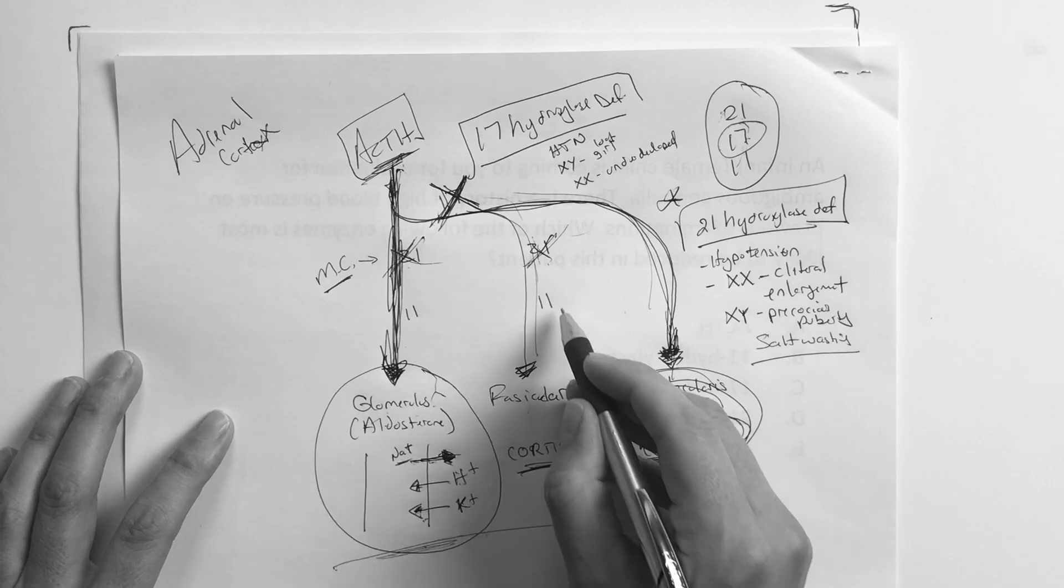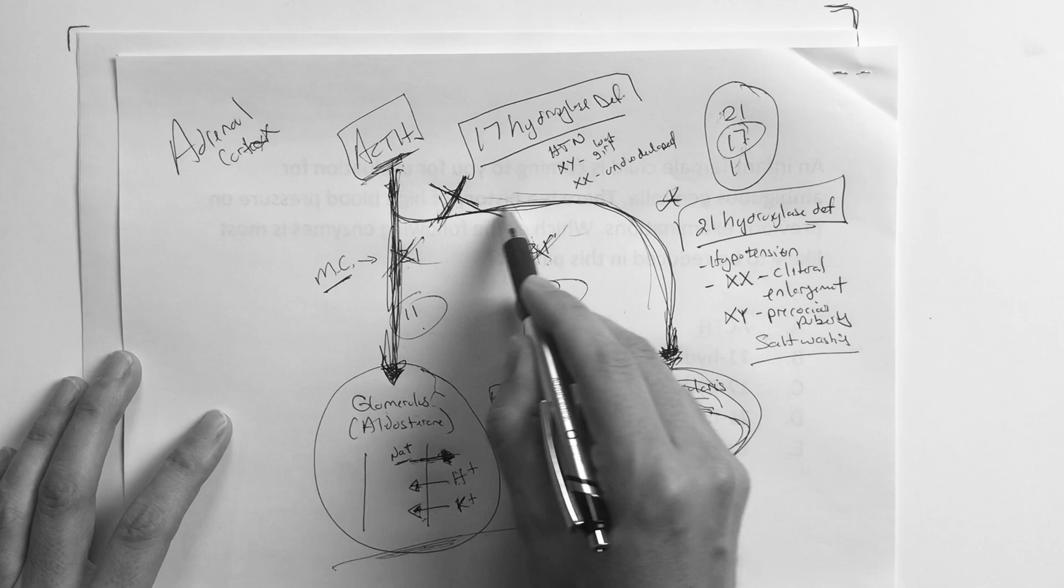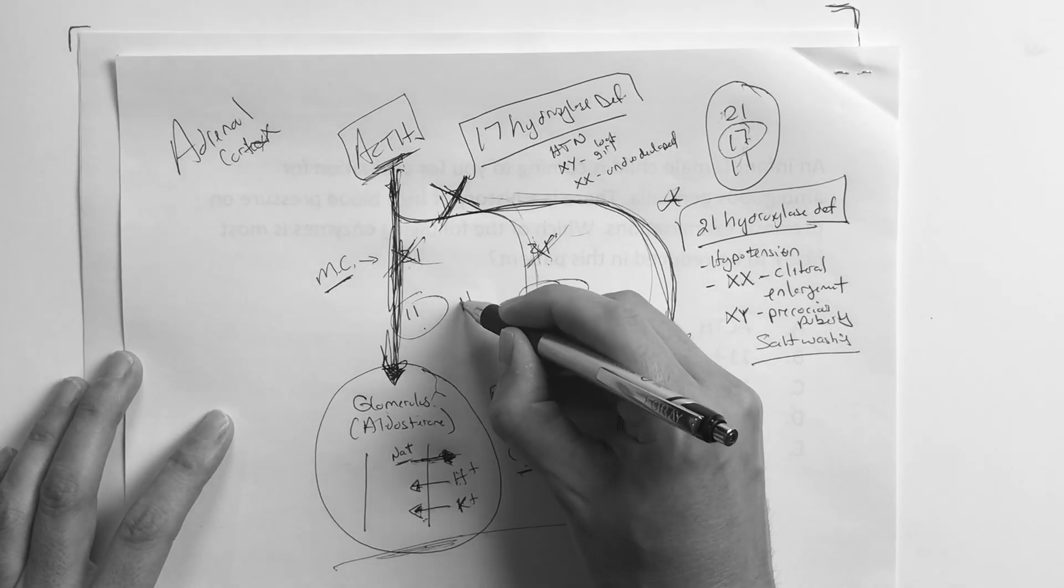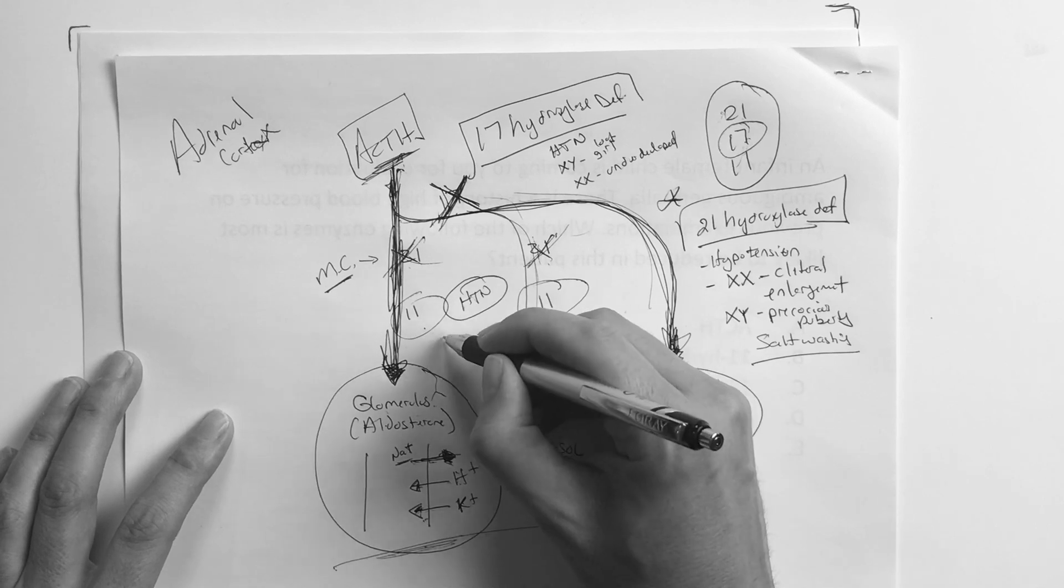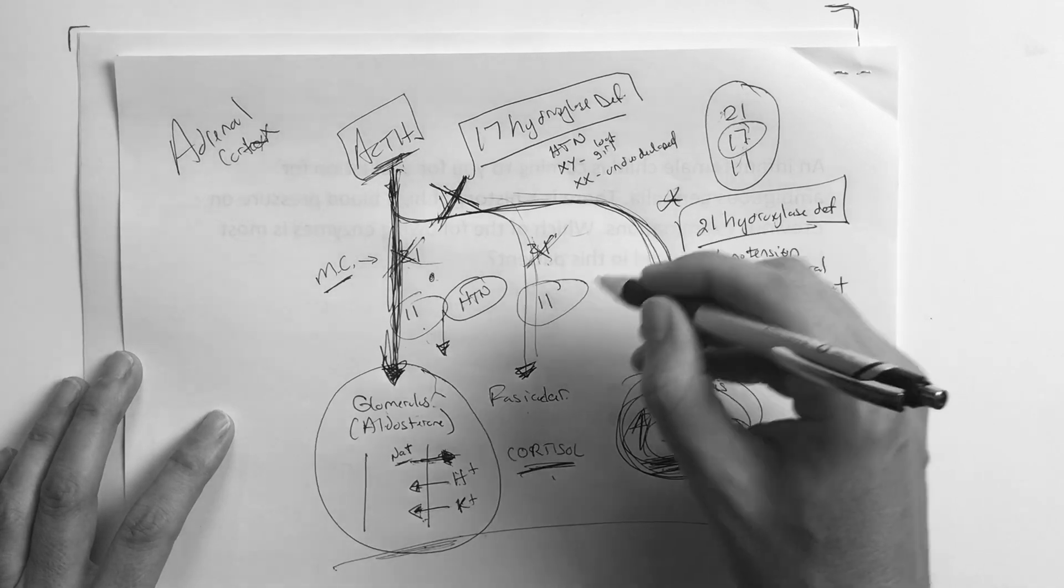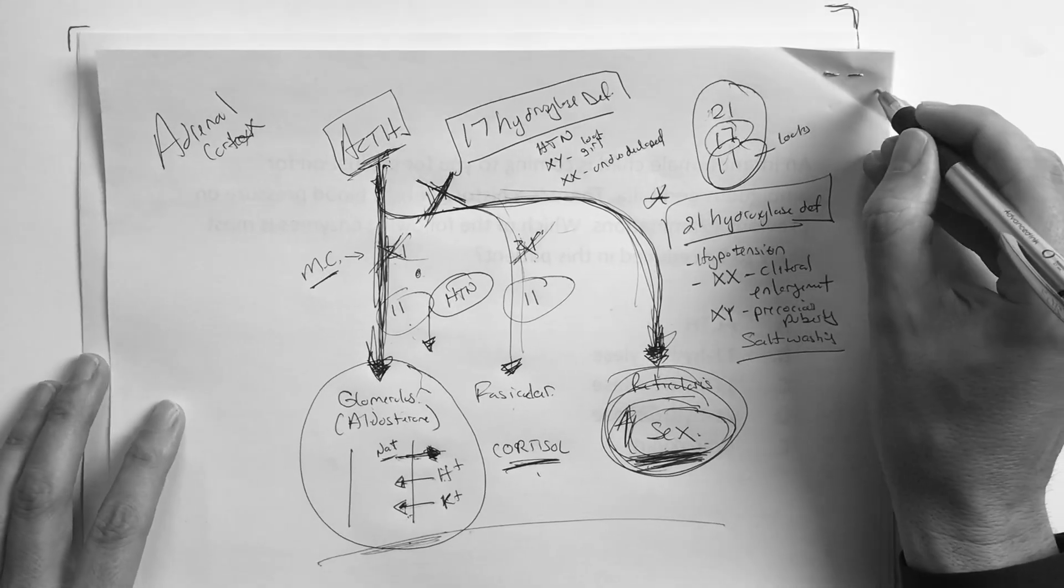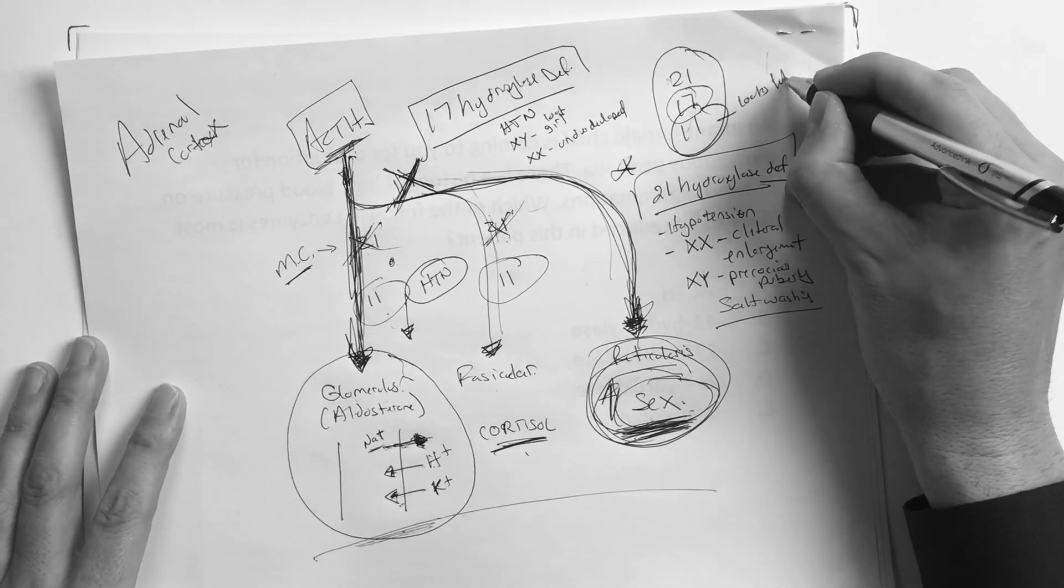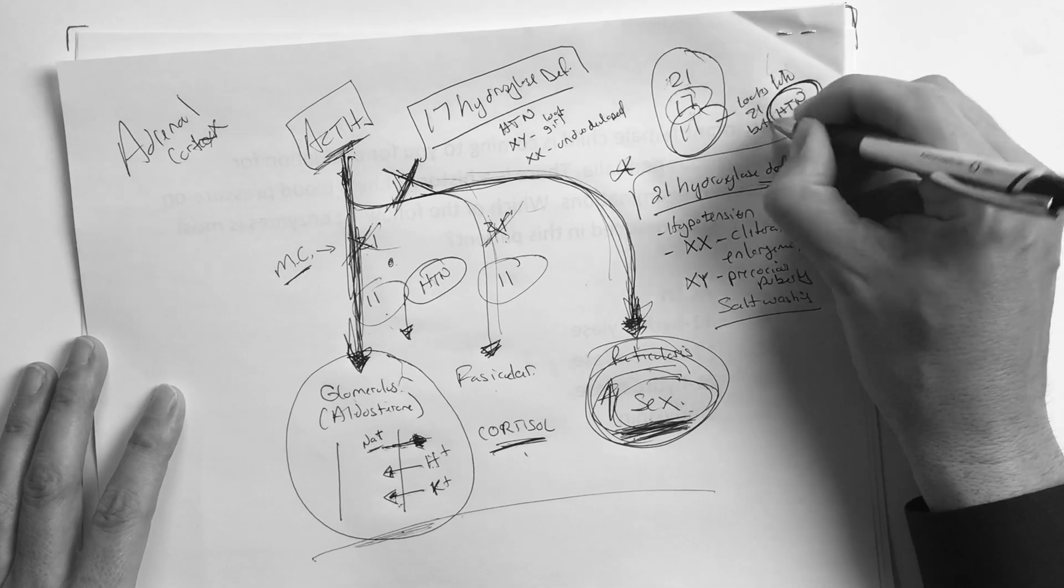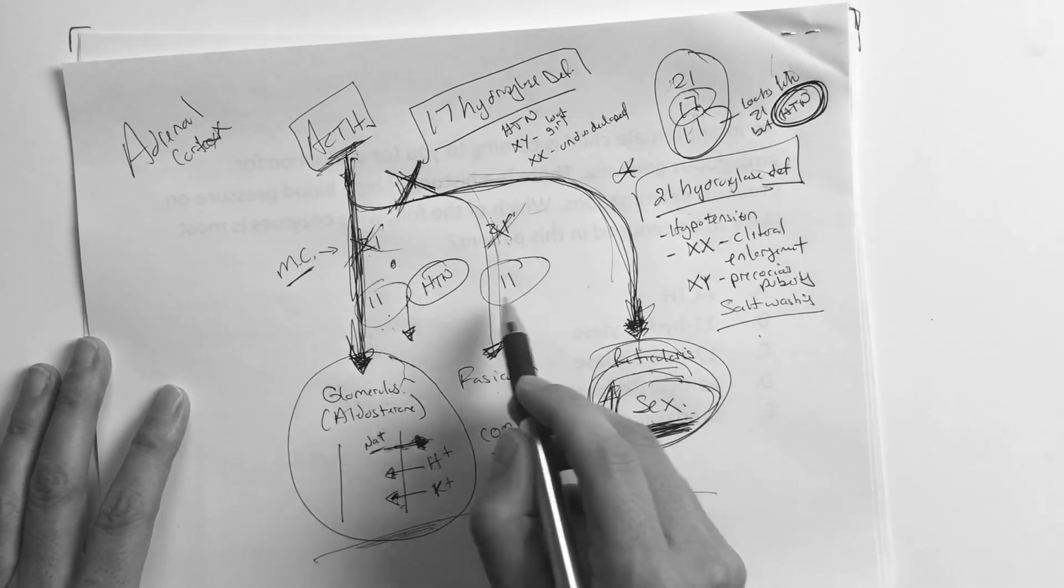Now, the kicker to this whole deal is if you get an 11 deficiency, it looks exactly like the 21. Everything gets pushed this way, except you got a little bit of hypertension, meaning it got to this point. So you got a little bit of that hypertension. So the 11 hydroxylase looks like 21 hydroxylase, but hypertension, that's the key. You got to have that piece. If I see someone like this, but they have hypertension, you got to think it's an 11.